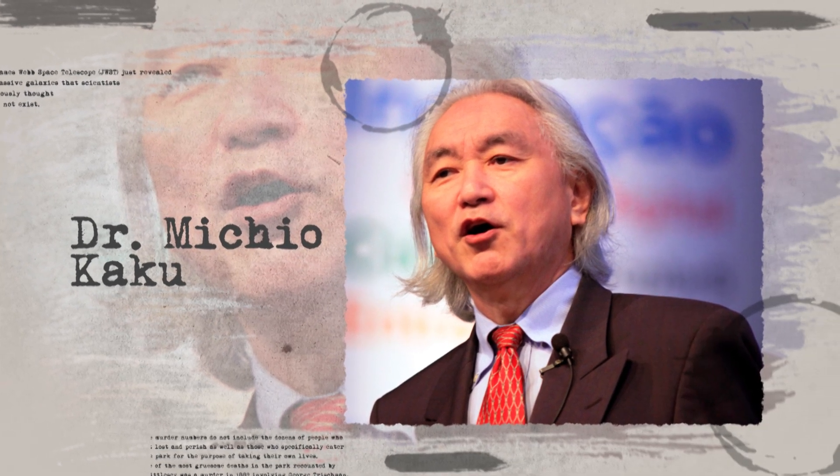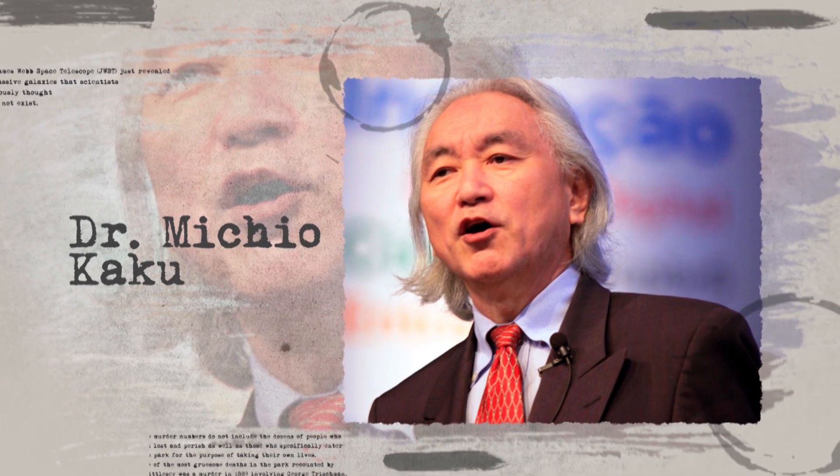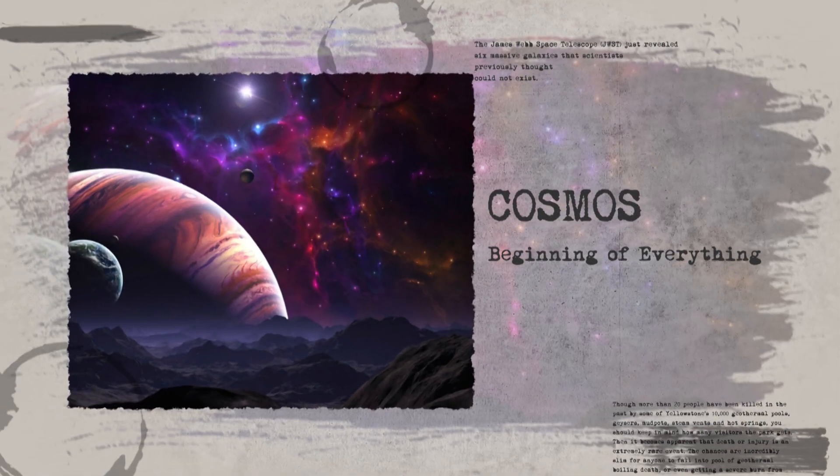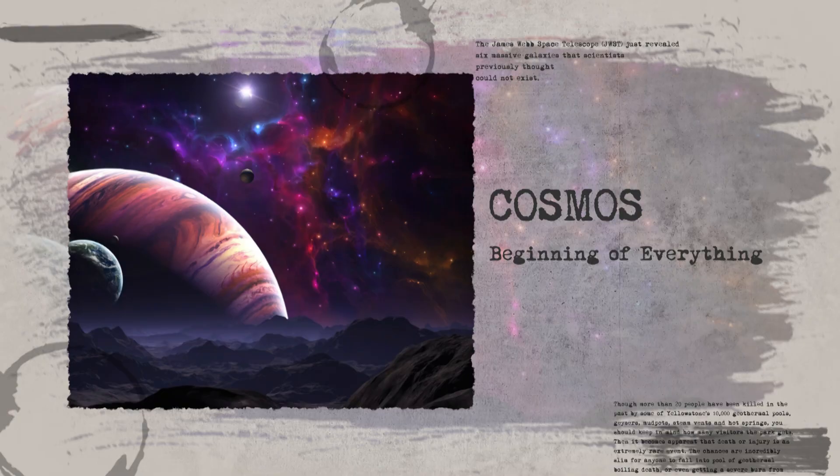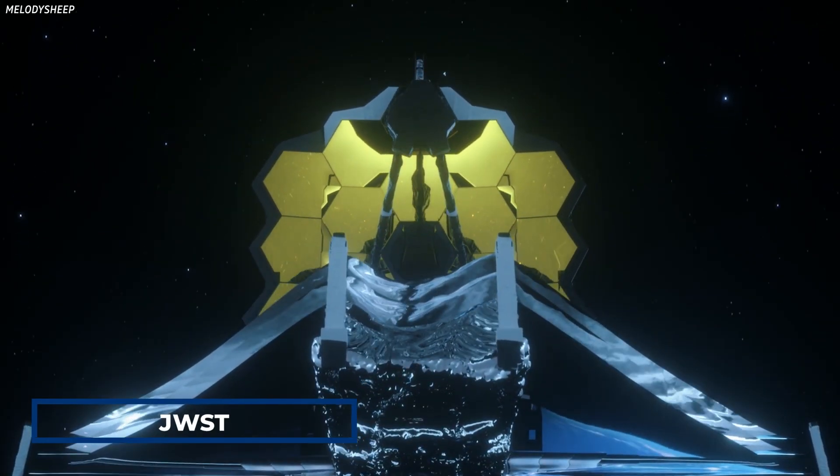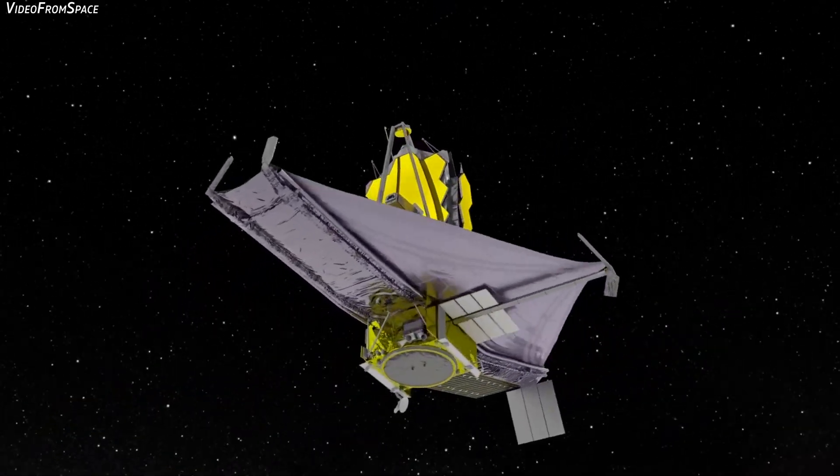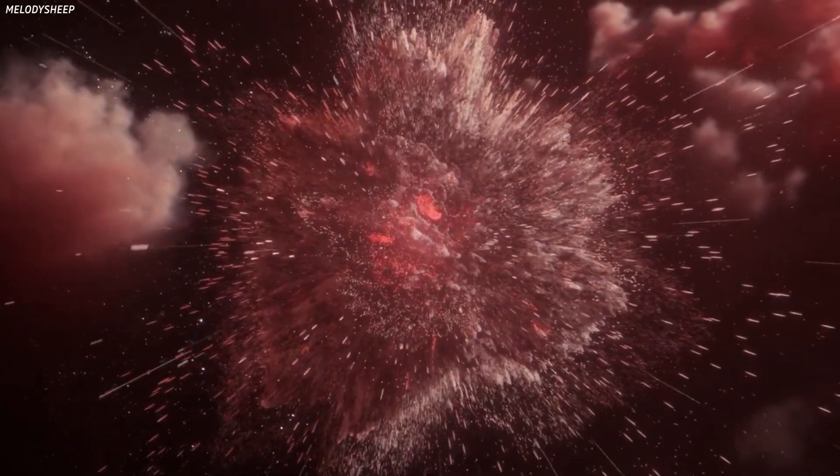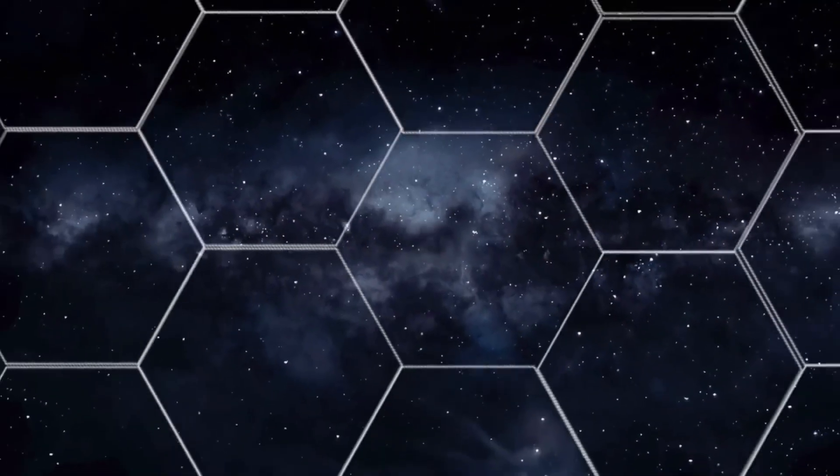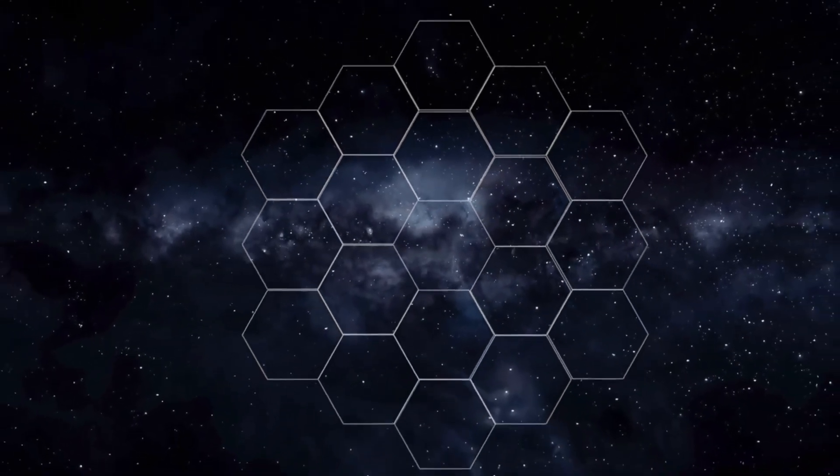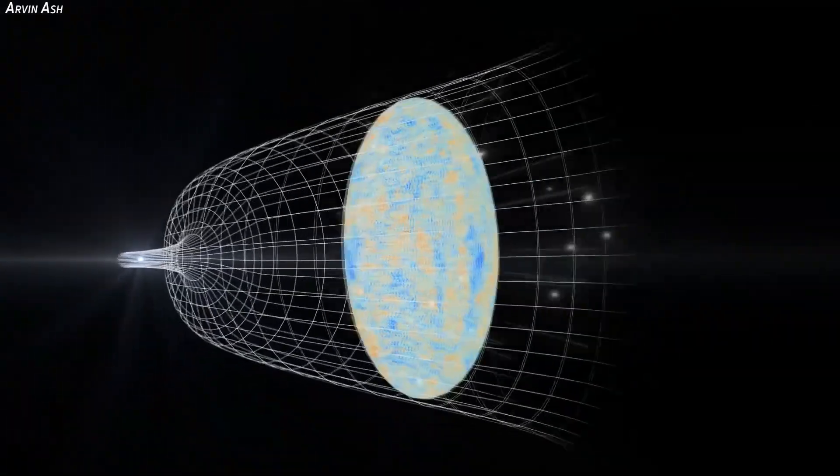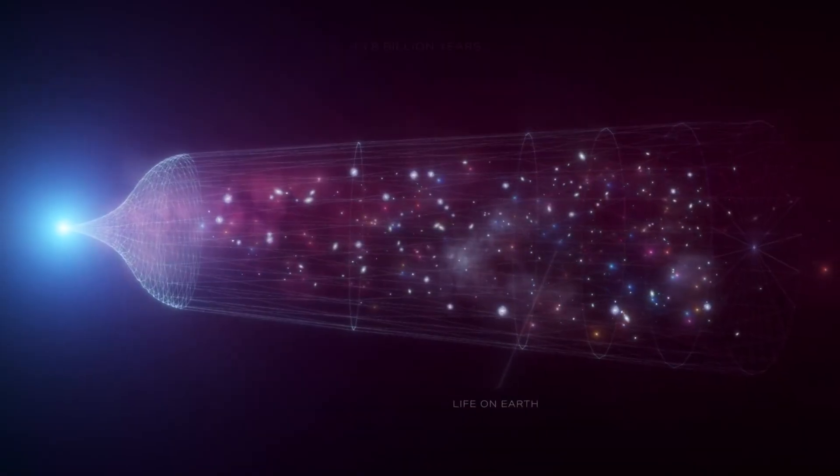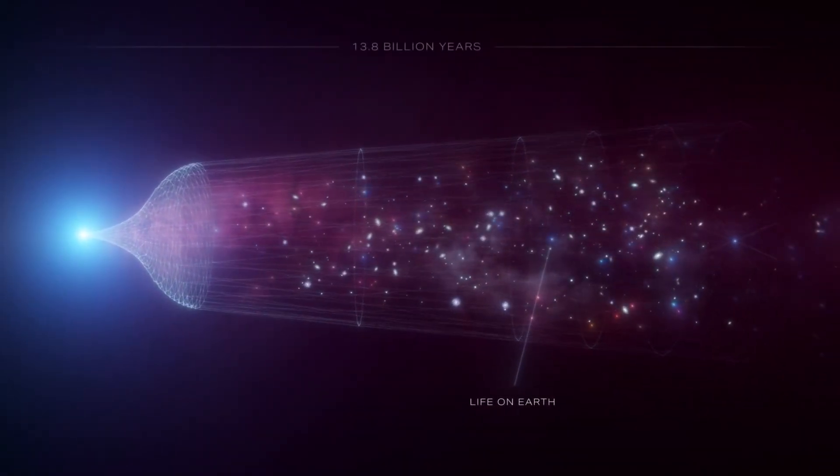Renowned American theoretical physicist Michio Kaku just shared a stunning discovery made by the James Webb Space Telescope, and it changes everything we know about the cosmos and its existence. The James Webb Space Telescope, or JWST, is one of the most advanced space observatories ever built, and it is set to revolutionize our understanding of the universe. One of its primary objectives is to observe the very first galaxies that formed after the Big Bang. These galaxies are thought to have formed just a few hundred million years after the birth of the universe, and they hold valuable clues to the early evolution of our cosmos.